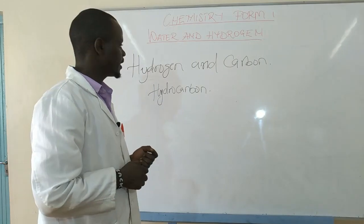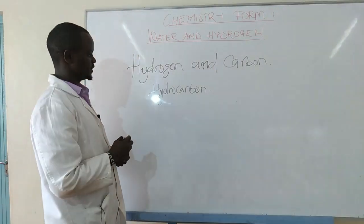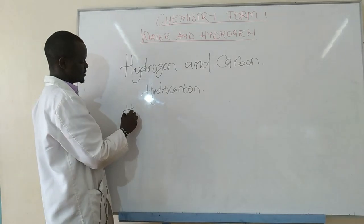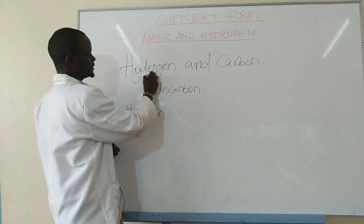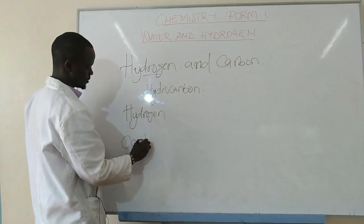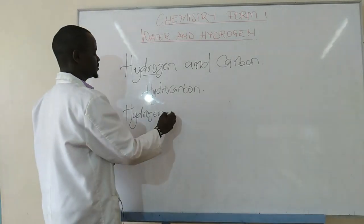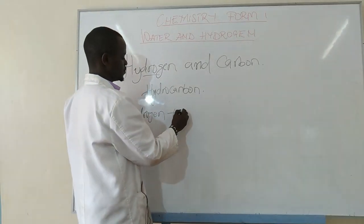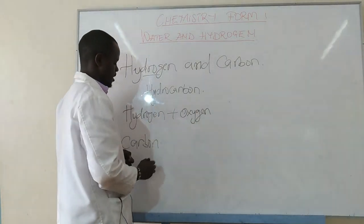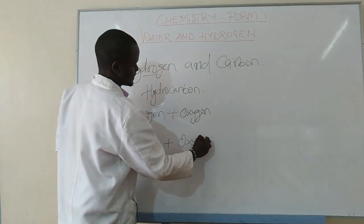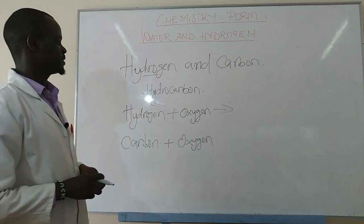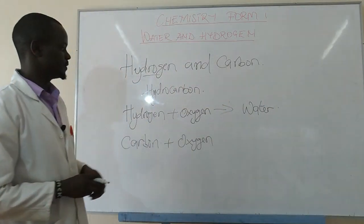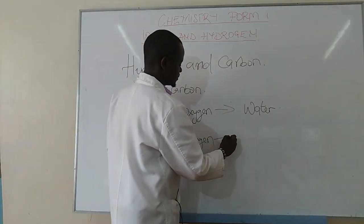What happens when we burn a hydrocarbon in the presence of air? For example, burning a candle: a hydrocarbon contains hydrogen and carbon. Hydrogen will burn in the presence of oxygen — the element that supports combustion — and hydrogen burning in the presence of oxygen will produce water, which is an oxide of hydrogen. Carbon will burn in the presence of oxygen to produce carbon dioxide.